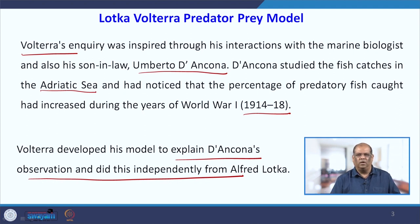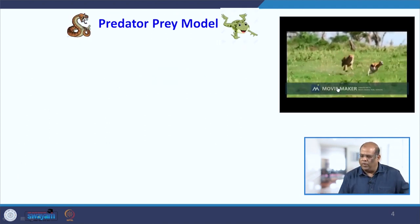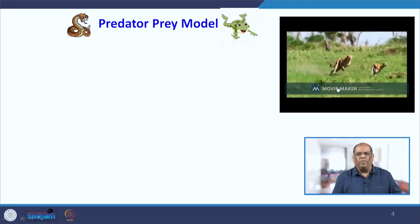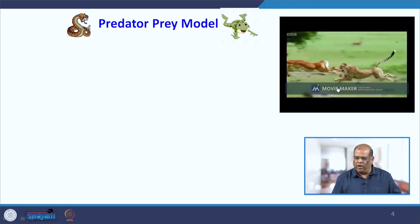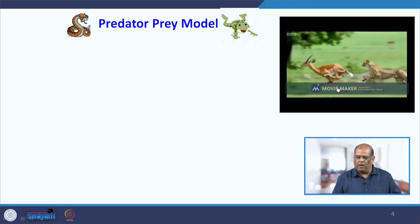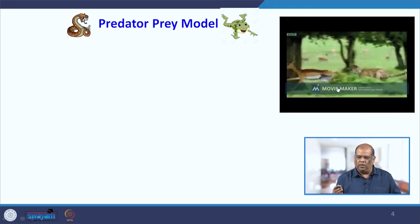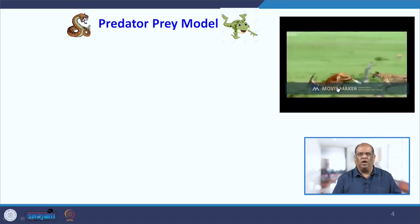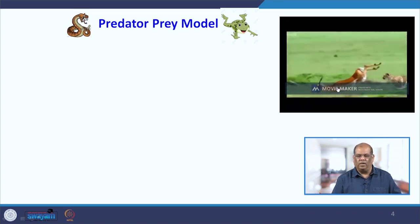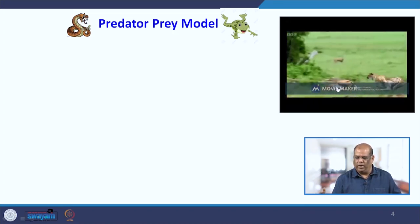Though obviously he acknowledged Alfred's work, and this equation came to be known as the Lotka-Volterra Prey-Predator Model — that is the history behind this model. If we consider the prey-predator model, as you can see in the video, the predator here is the cheetah and the prey is the deer.